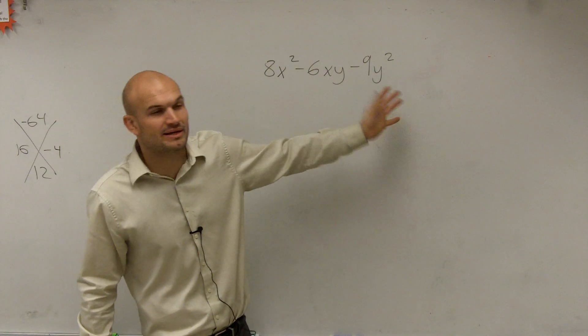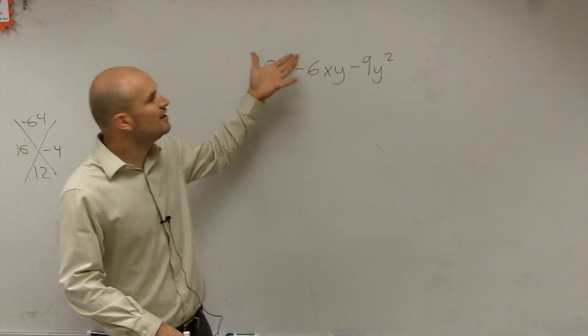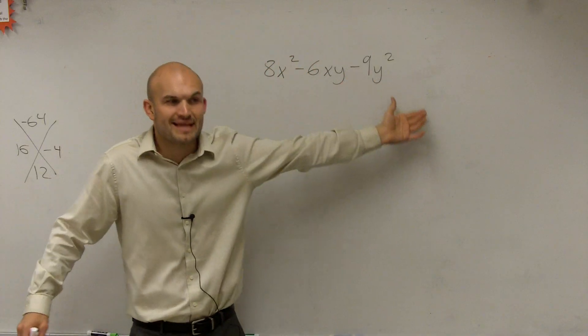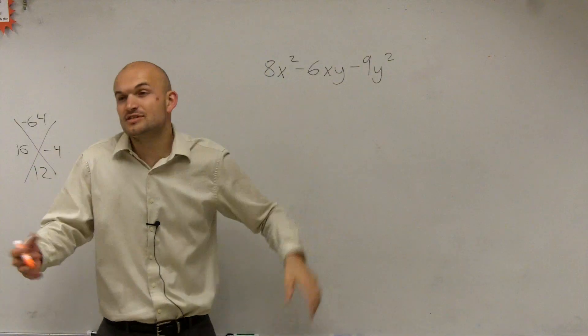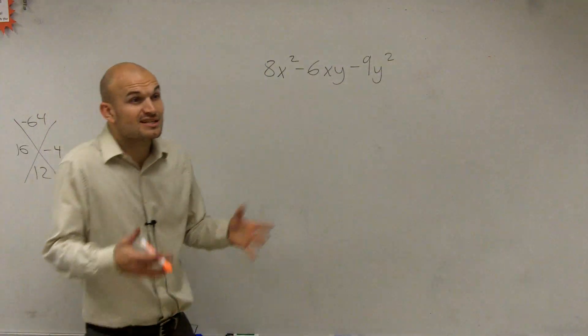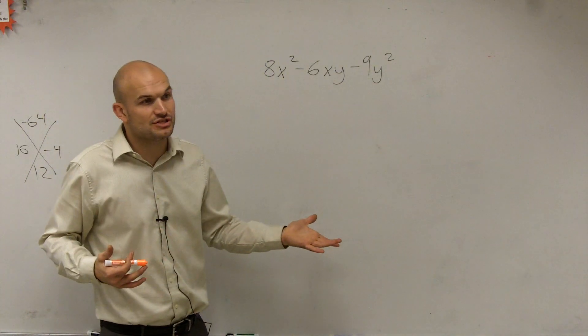We're close, but we can't get the two out of the nine, right? We can get it out of the first two terms, we can't get it on nine. We can get an x out of the first two, but not the last. We can get a y out of the last two, but not the first. So there's nothing we can factor out of a GCF. It's close, but we can't factor anything out of a GCF.